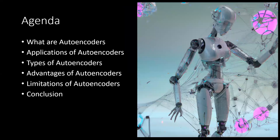Let's begin by talking about the agenda for today's video. There are five important points I'll be covering. First, what are autoencoders? Second, what are the different applications of autoencoders? Third, the different types of autoencoders. Fourth, the advantages of autoencoders. Fifth, the limitations of autoencoders. And finally, we'll look at the conclusion.